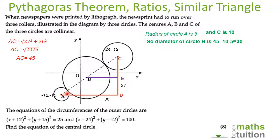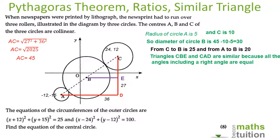That angle there is equal to this angle because they're corresponding angles. This angle is common to both triangles, so CBE and CAD are similar triangles.